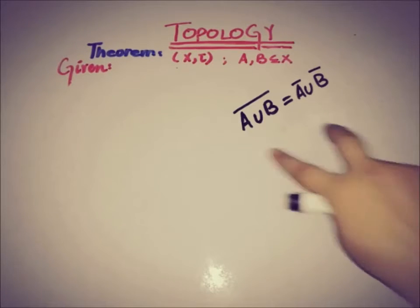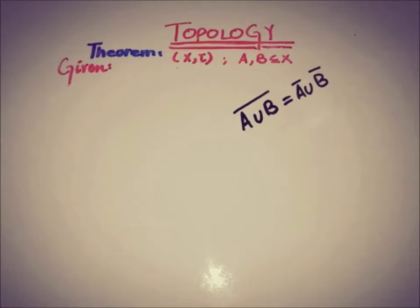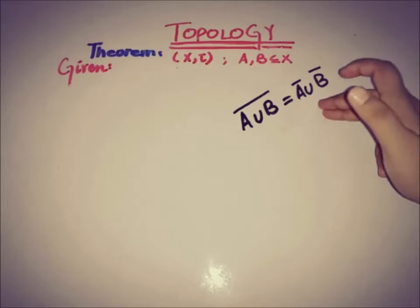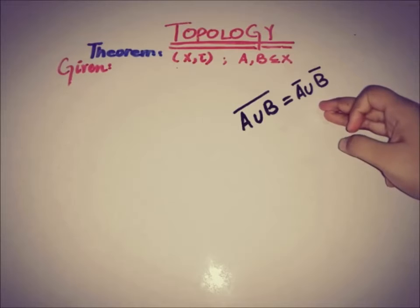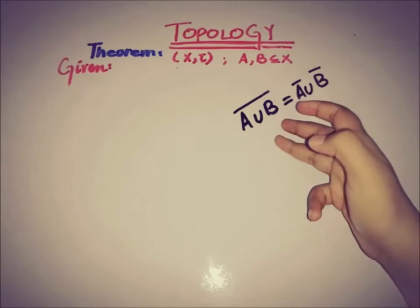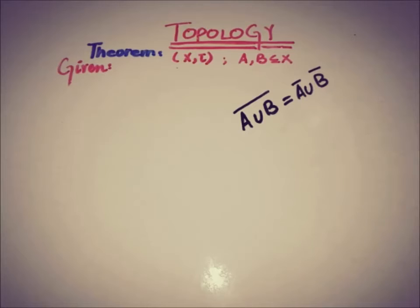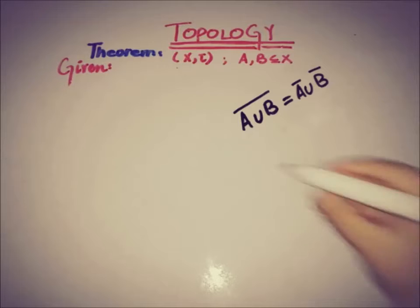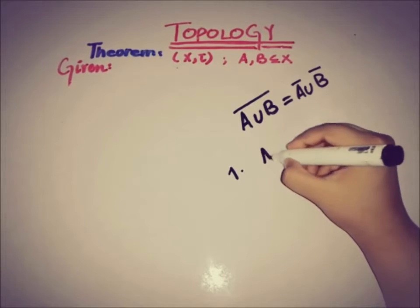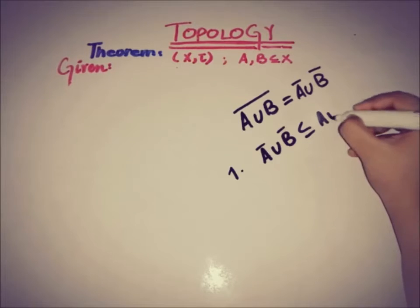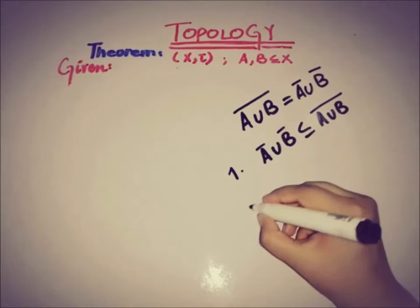We have to prove that if we take the closure of the two sets and then take the union, this is eventually equal to taking the union of the two sets and then taking the closure. We will prove this in two parts. The very first part is to prove that A closure union B closure is a subset of A union B whole closure.